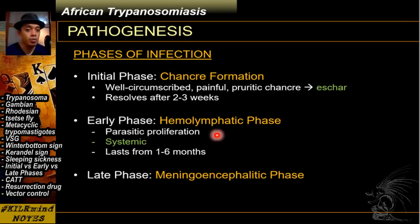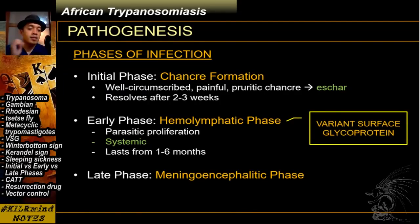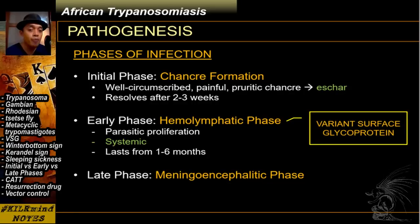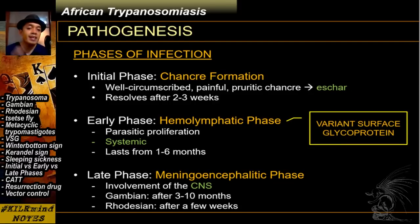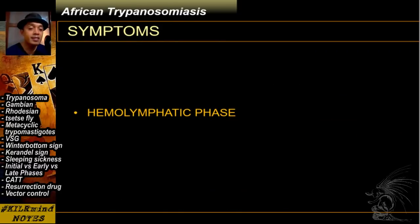The early phase is described as the phase where there is parasitic proliferation and systemic distribution of the parasite. This particular early phase can last for one to six months depending on the species of the trypanosome. During this phase, the parasite exhibits or creates immunogenic variant surface glycoproteins. Please take note of these VSGs, because this is the primary mode of evasion from the human immune system. The last phase is characterized by involvement of the central nervous system. In Gambian infections this occurs roughly after three to ten months, while in Rhodesian infections it can occur as early as a few weeks from the initial infection.